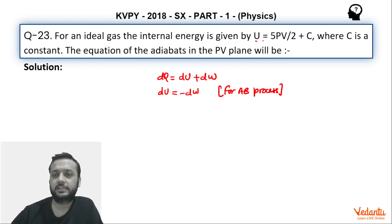So dU ki value kaise nikaal liya. Very simple. We have the equation given, okay? So U ki value given hai: 5PV/2 plus C, correct. So from here if we find dU, what will it be? 5/2 times, if we differentiate PV using product rule...